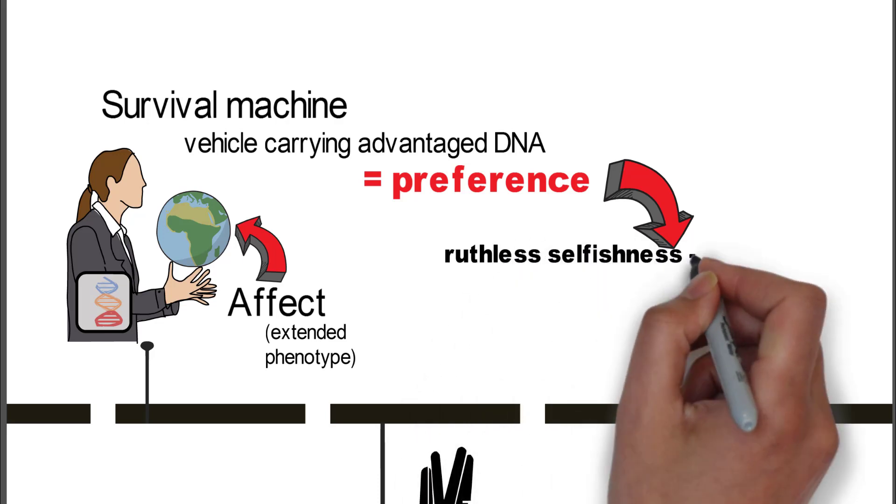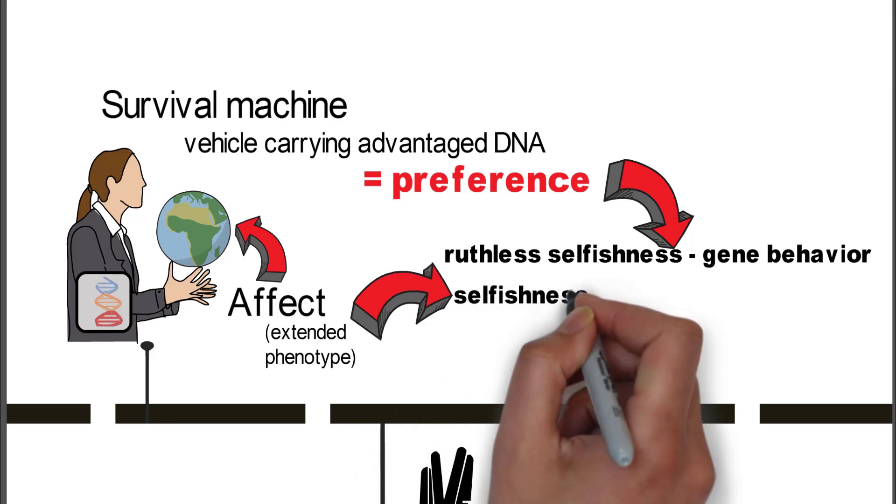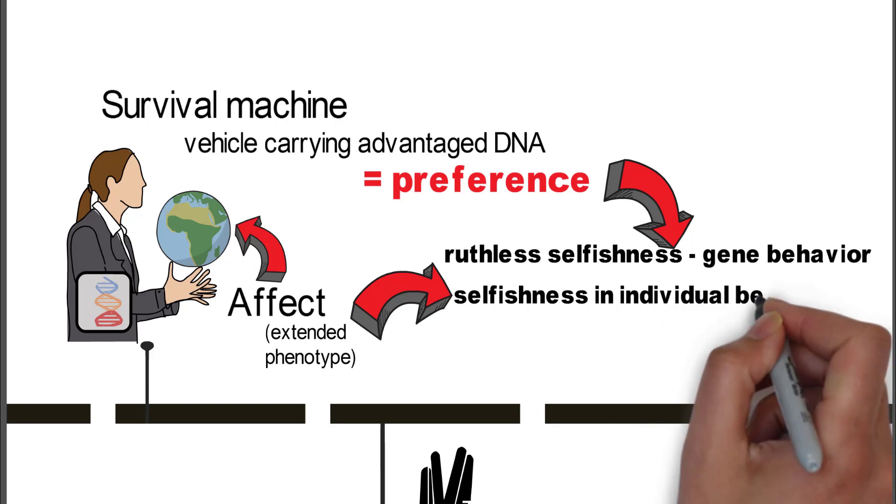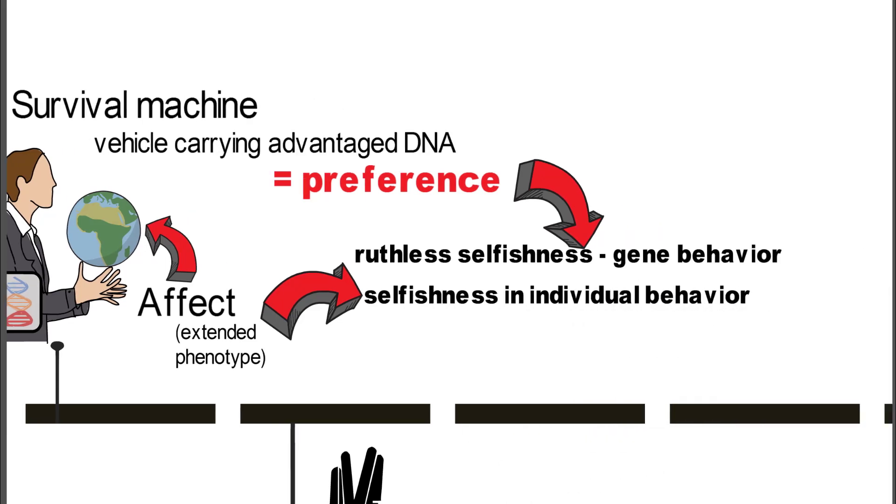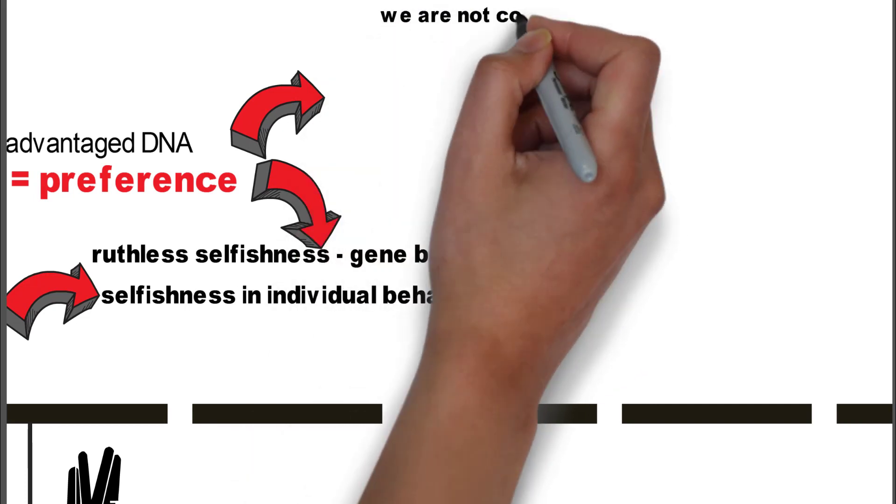And then what he says is that basically, though, the DNA itself is a ruthless, selfish gene, and that's our gene behavior. But then when you look at that in the extended phenotype, which is us, our self, that basically creates a preference for selfishness in our individual behavior.